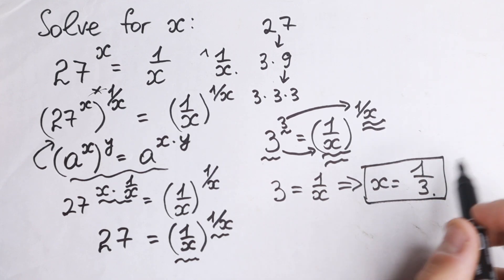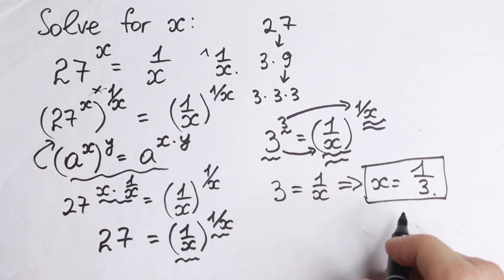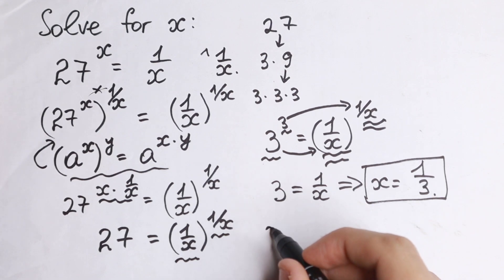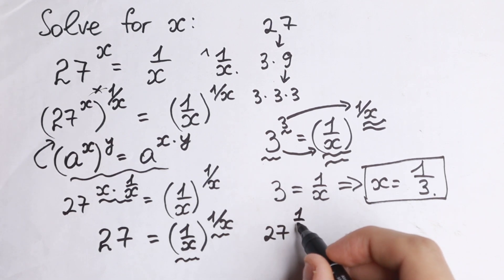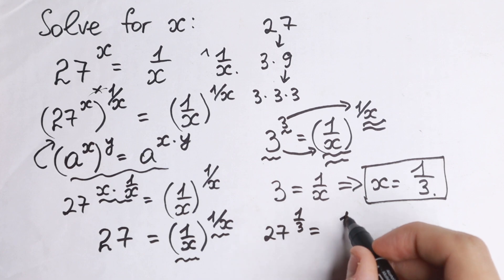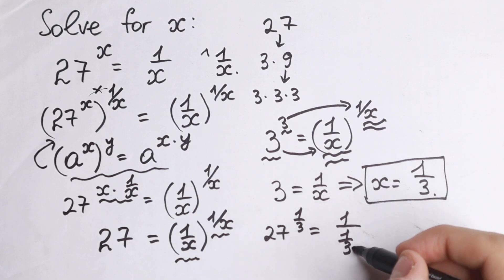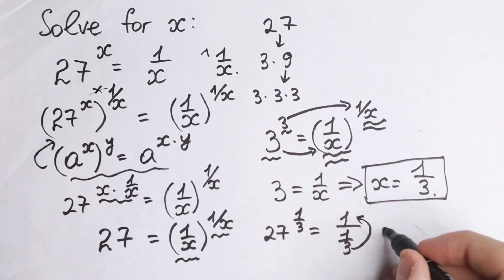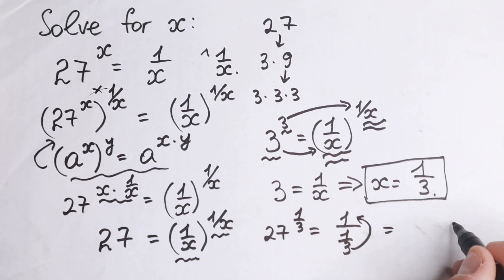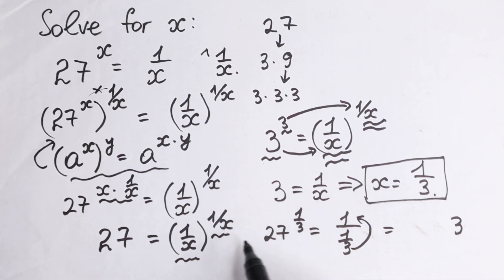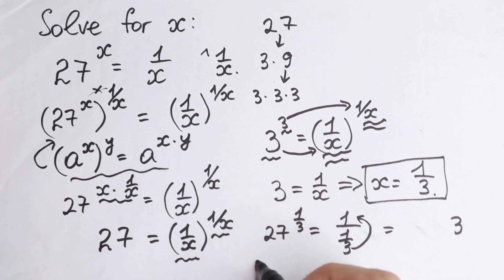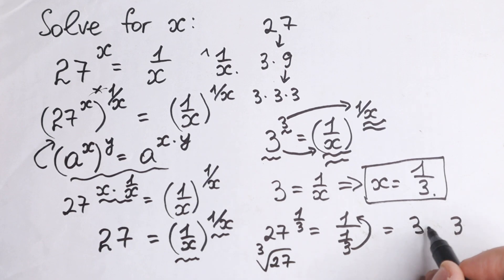Let's check it, because this is a tricky method. 27 to the power 1 third equals 1 over (1/3). On the right-hand side, 1 over 1/3 gives us 3. On the left-hand side, 27 to the power 1 third is the same as the cube root of 27, which equals 3. So 3 equals 3 — our root is correct.